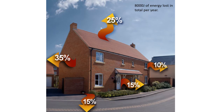This example shows a house with energy percentage loss: 8,000 joules of energy lost in total per year — 25% from the roof, 35% from the walls, 15% to the ground, 15% from the doors, and 10% from the windows.